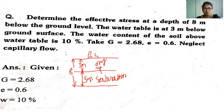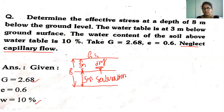The water content of the soil above the water table is W = 10%. Specific gravity G = 2.68, and void ratio e = 0.6. Neglect capillary flow — this means the top layer will be in dry condition. If capillary flow is not mentioned in a problem, you can take either dry condition or wet condition.